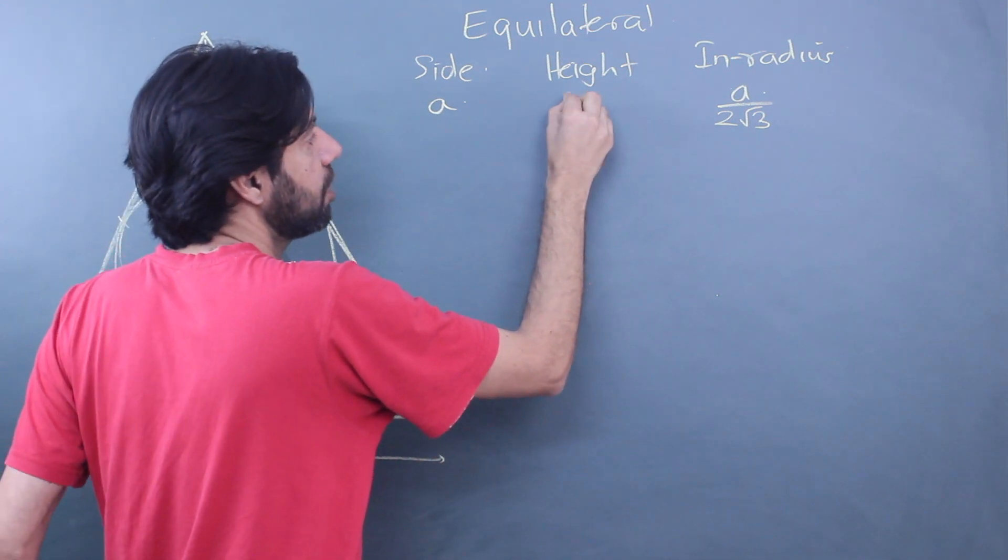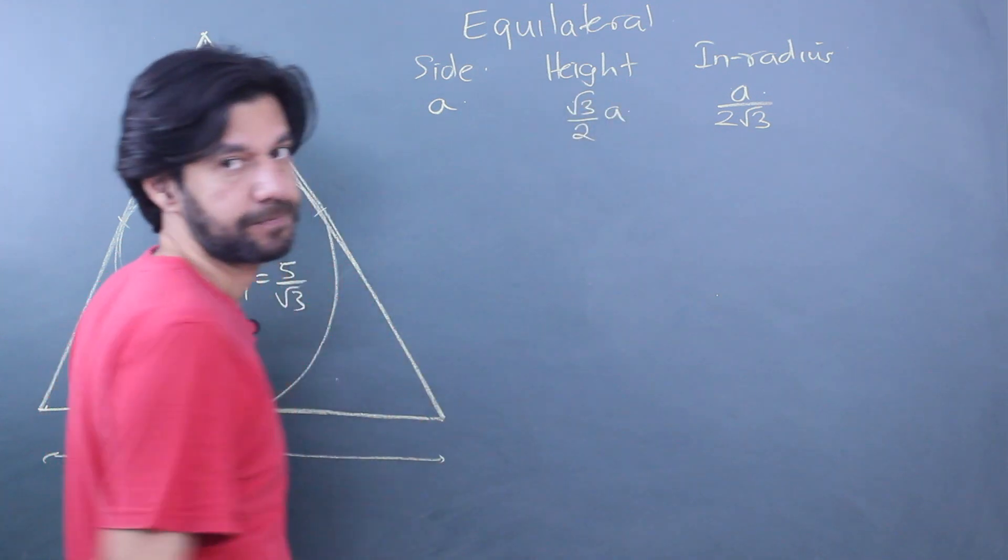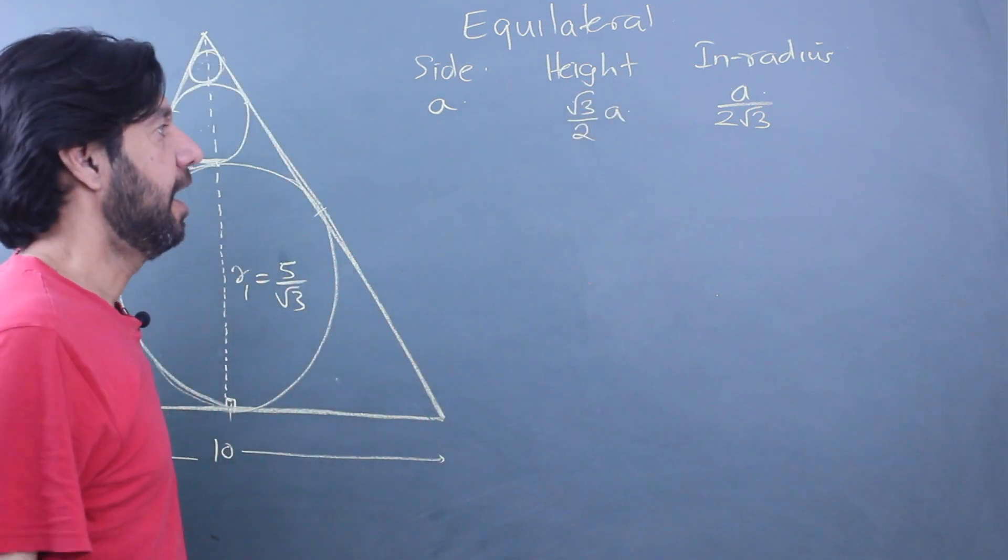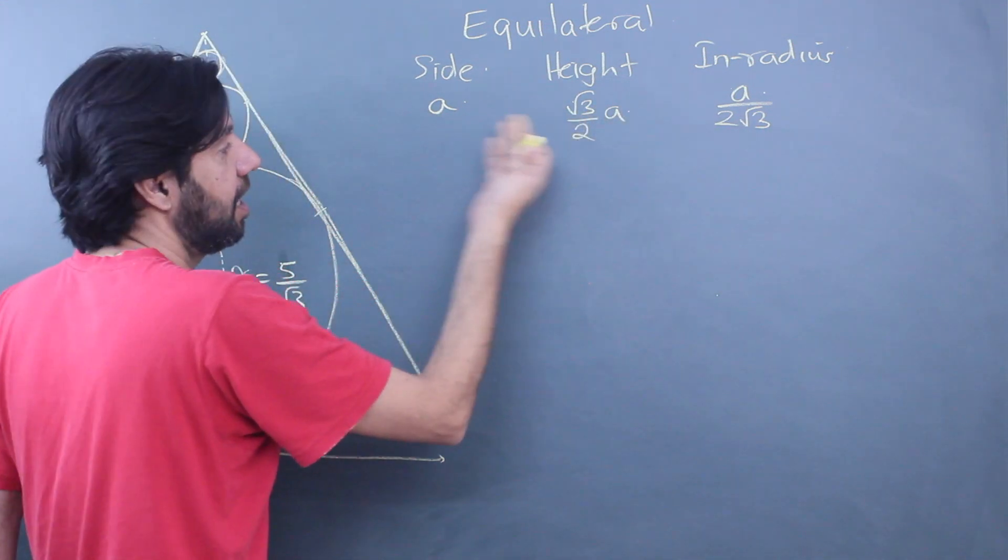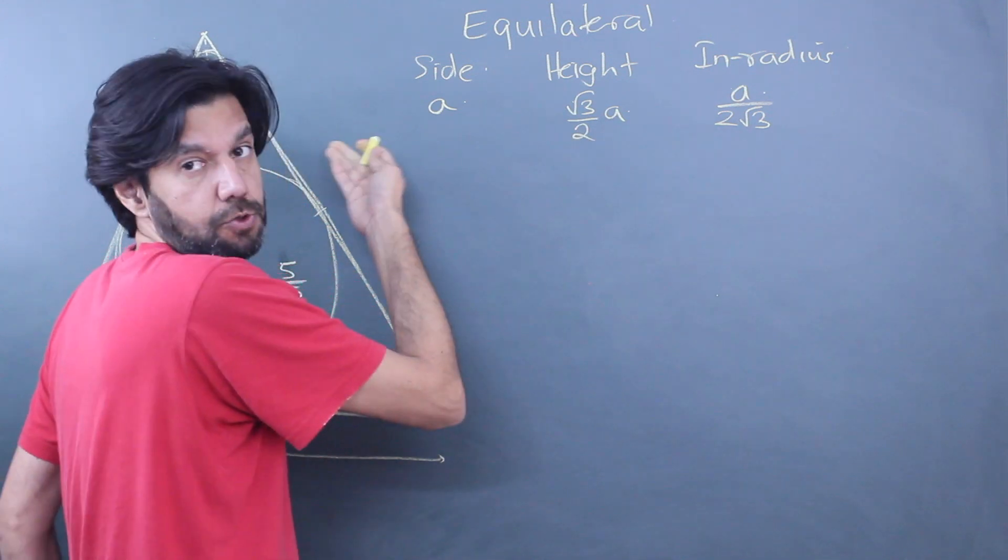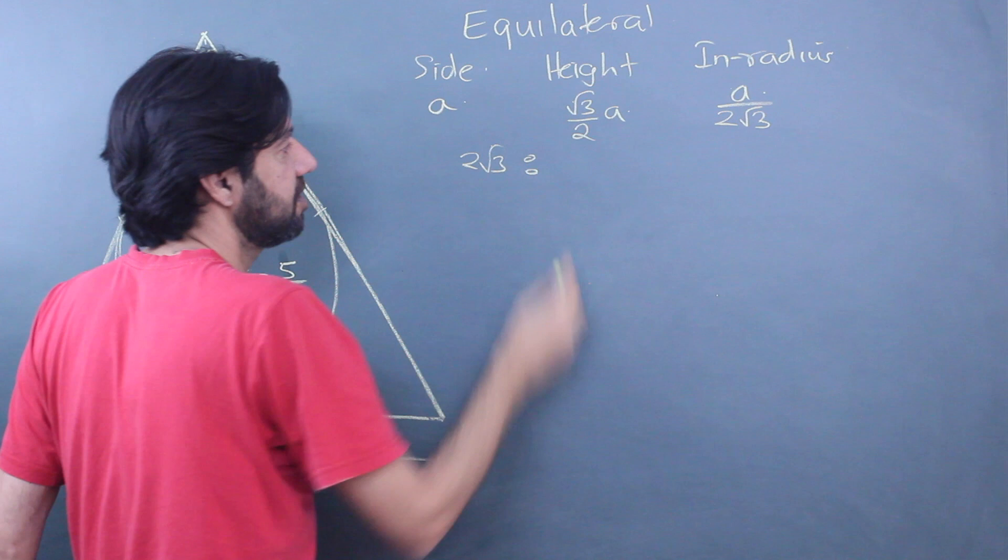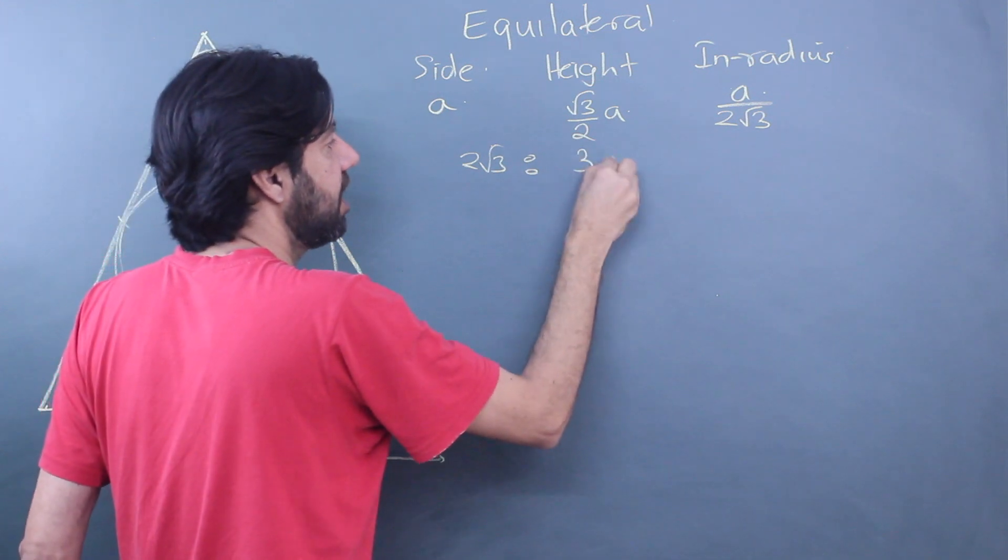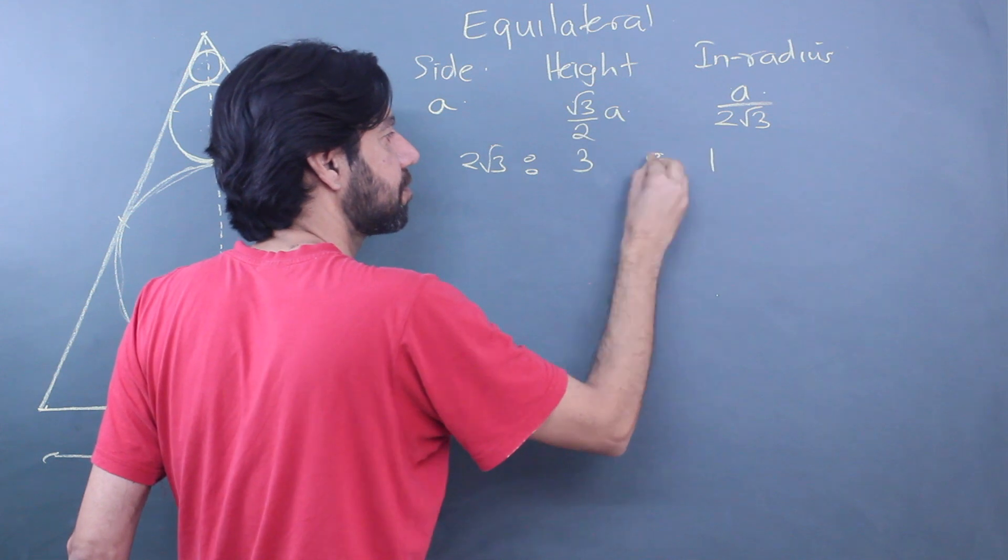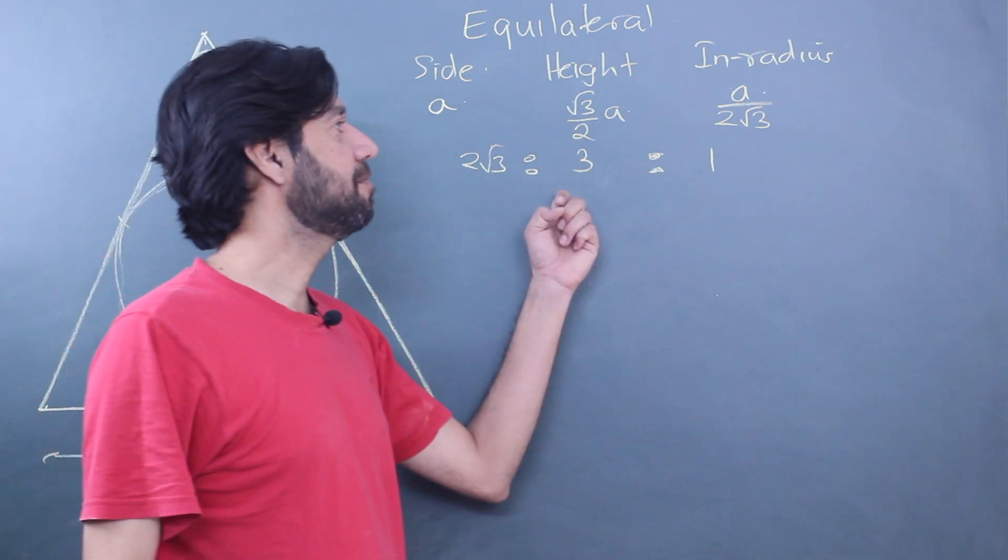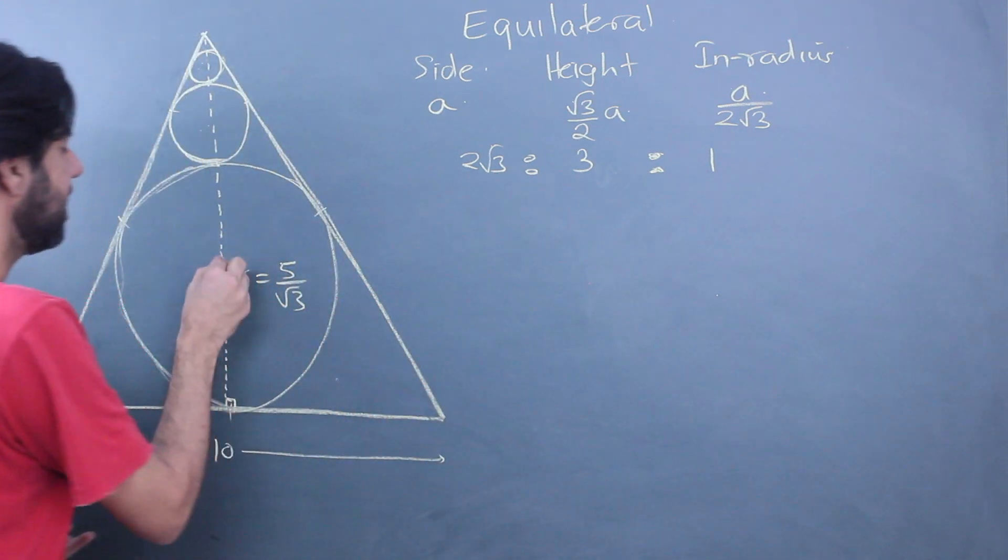You also need to know the height h is (√3/2) times a. So if I take the ratio of this, I'll multiply it by 2/√3. So the ratio is going to be 2/√3 × (√3/2)a = 1. So now I've got the relation between height and inradius also.